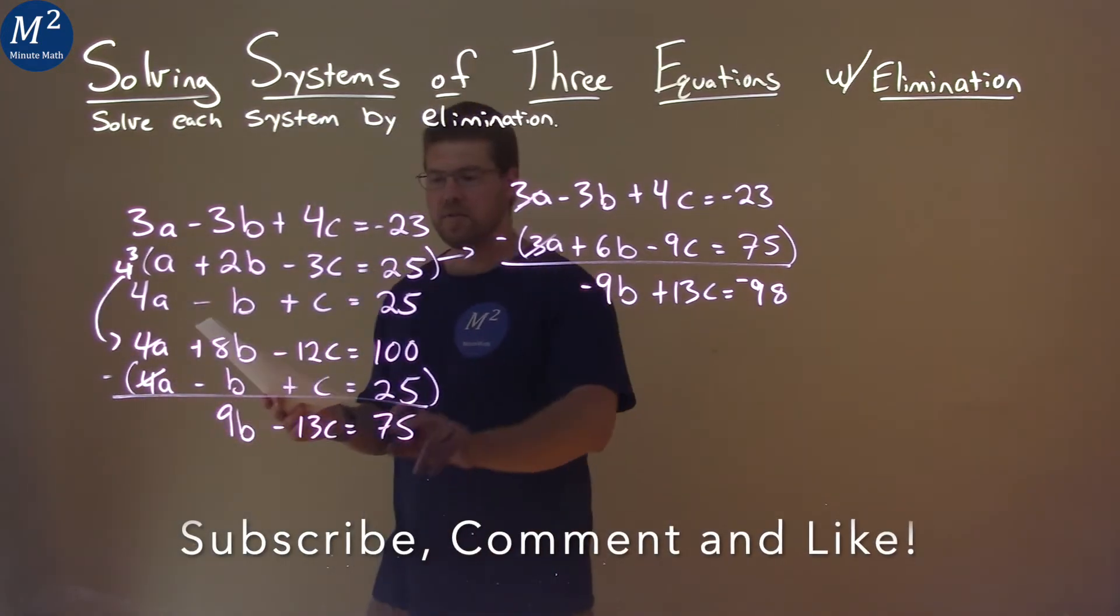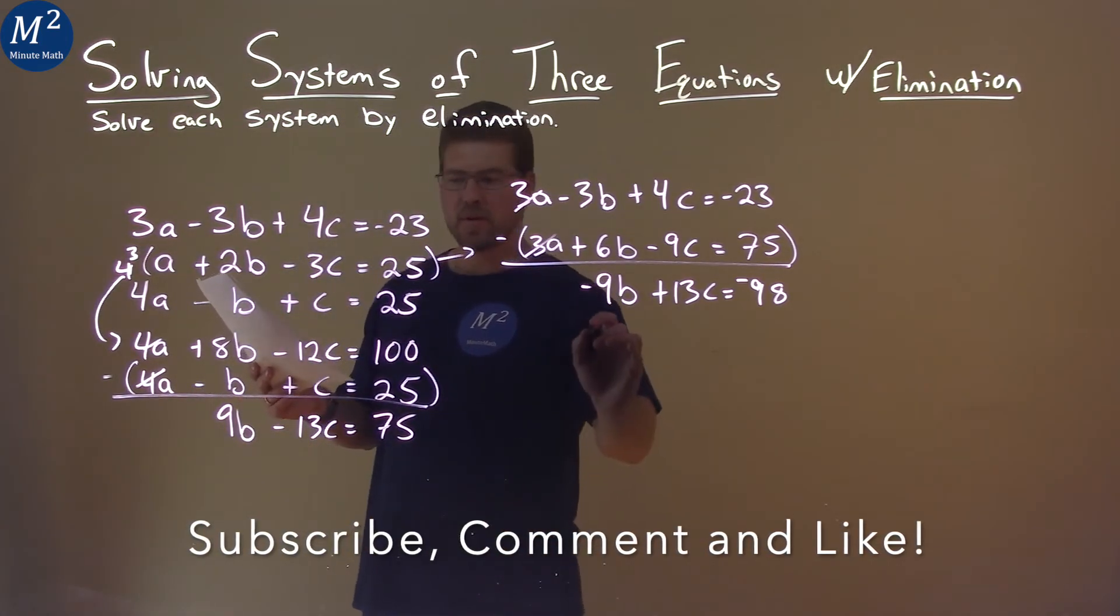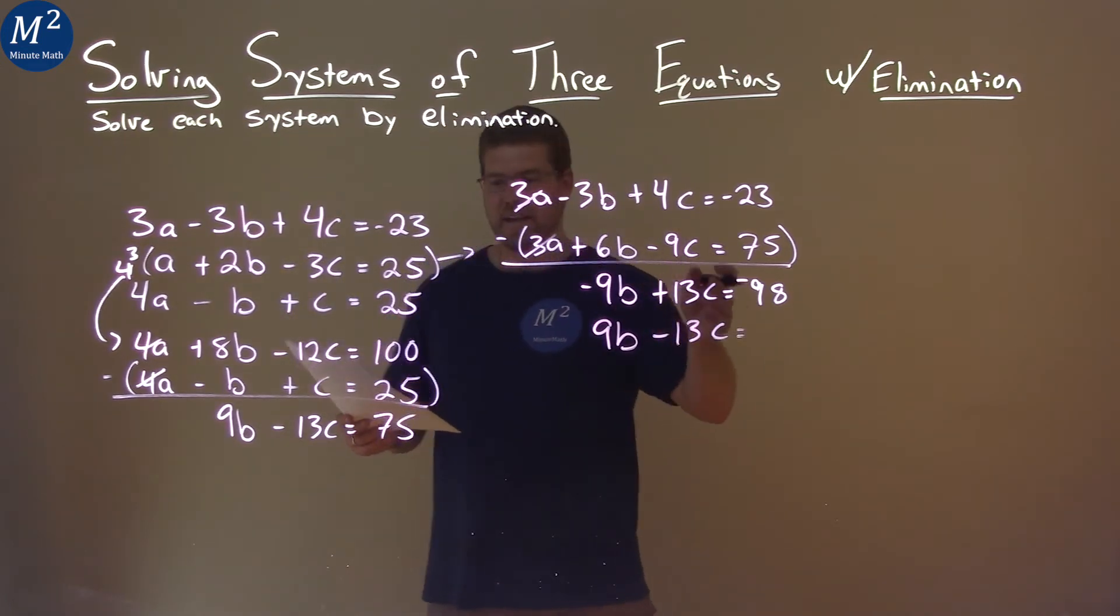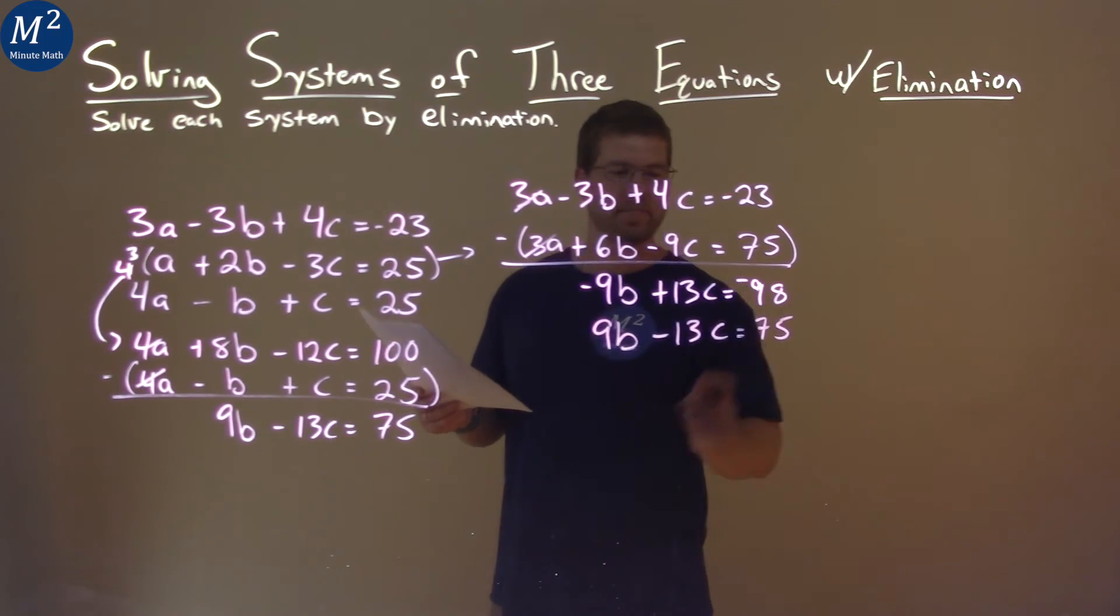So now we have two equations here. And look, they both have a 9B and a negative 9B. So we bring this over here, we have negative 9B plus 13C equals negative 98, and we have a 75, oh sorry, 75 right here. Okay.